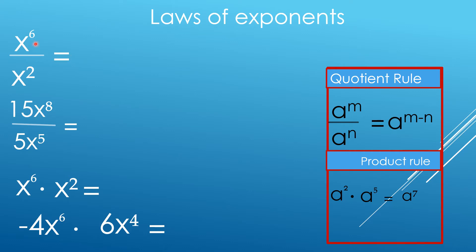So here we have X to the sixth power divided by X squared, that is equal to X to the fourth power — 6 minus 2 is 4. So 15X to the eighth power divided by 5X to the fifth power: just divide first the numerical coefficient and subtract the exponents, copy the base. So that is 3X cubed.